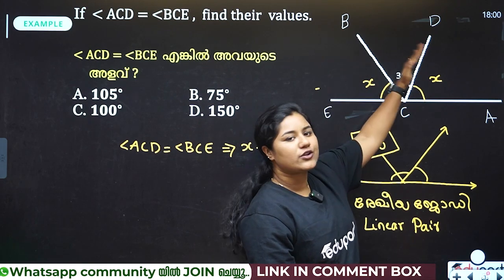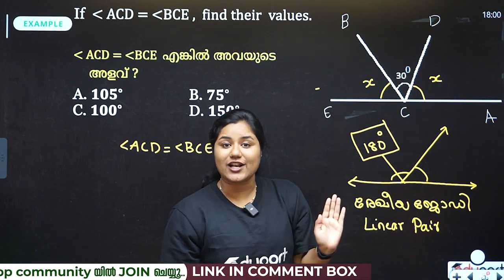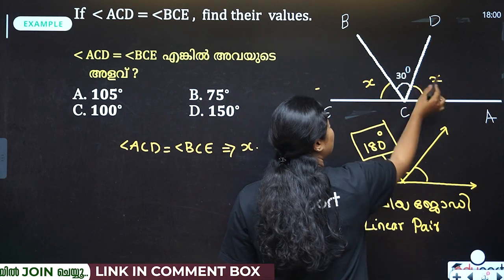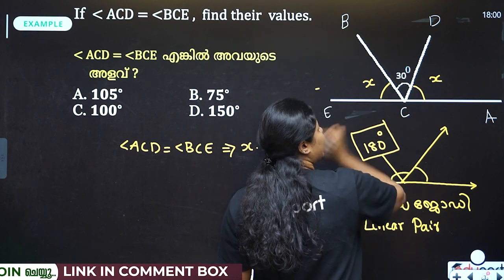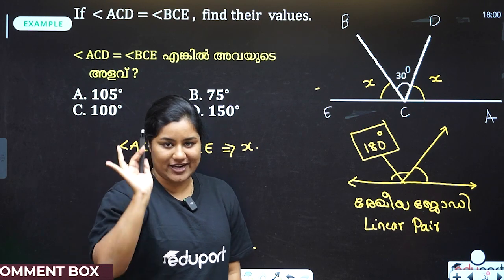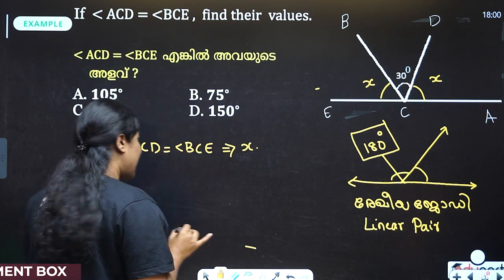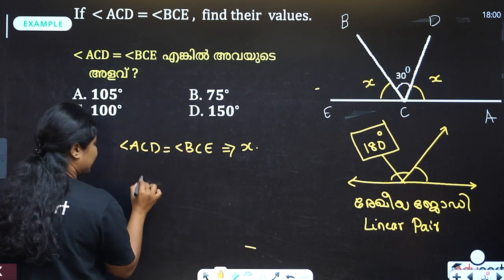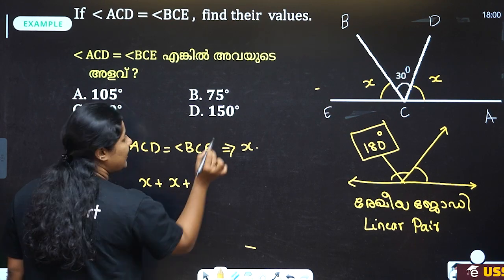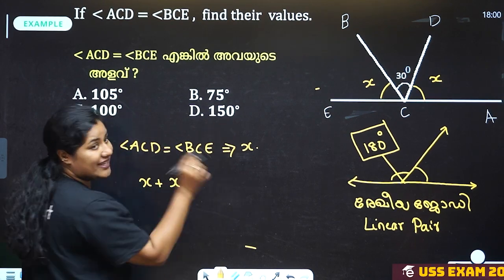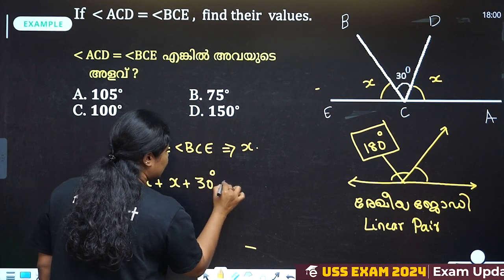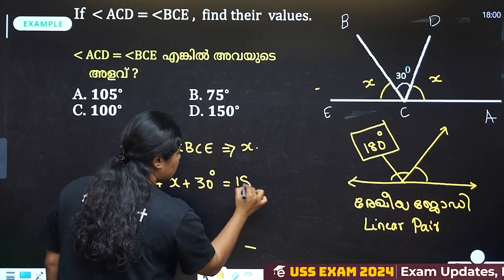So, first of all, what is 180 degrees? These three angles — x, 30, and x — if we add them, we will get 180 degrees. That is, I would say: ACD plus BCE plus 30 degrees, that is BCD, equals 180 degrees.